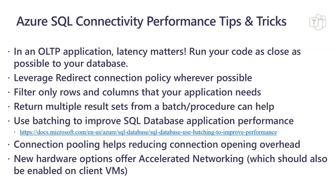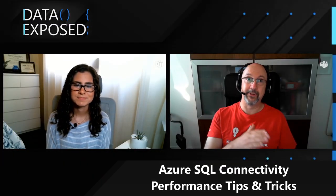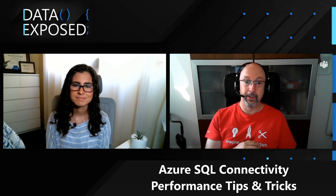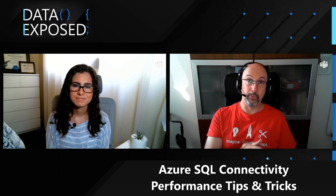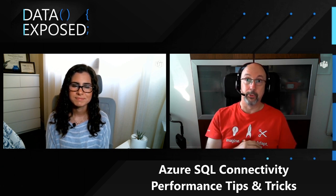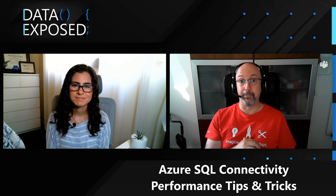We recently announced new hardware options for Azure SQL, including M-Series and F-Series type of hardware hosts. These new hardware options offer accelerated networking out of the box, so you don't need to configure anything on your database instance. You can leverage accelerated networking from all the client VMs and services that can enable that option on the networking side. This reduces the round-trip time to fractions of a millisecond from your application code to your database, making a lot of difference in OLTP applications.